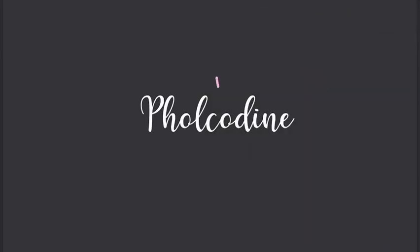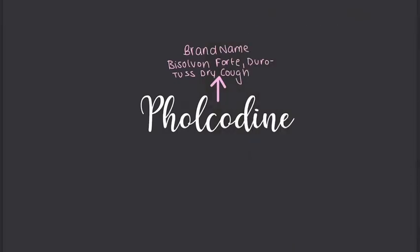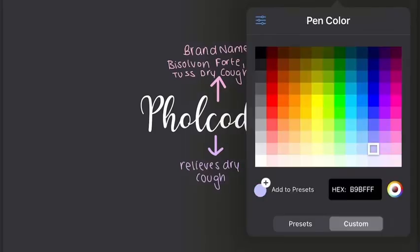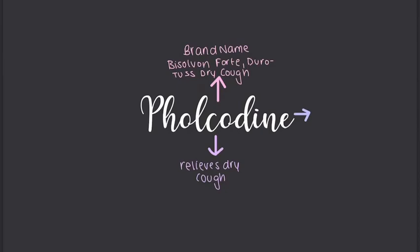Today we're going to be talking about pholcodine. This is an ingredient found in Biscolvene, Pholcodine Forte, and Durotuss Dry Cough Mixture. From those names, you can probably guess that pholcodine is used to relieve coughs — specifically dry coughs. This medicine is actually an opioid derivative. Opioids are usually medications used to treat moderate to severe pain, such as morphine and codeine.